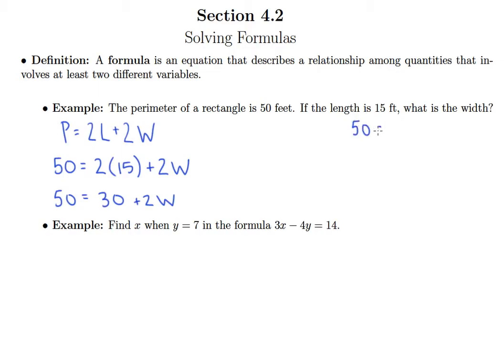50 equals 30 plus 2W. Our first step is to subtract 30 from both sides, so I get 20 is equal to 2W. Then I can divide both sides by 2.